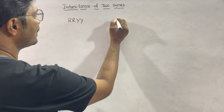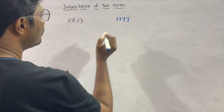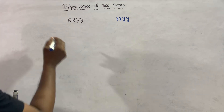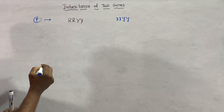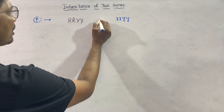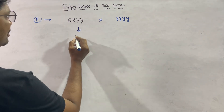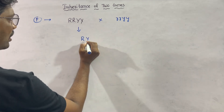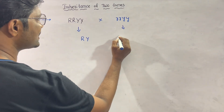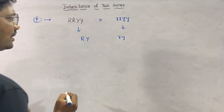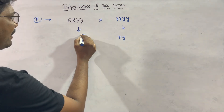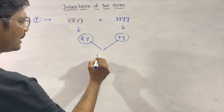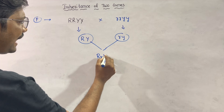We need parents that are true breeding — homozygous — for their respective characters. We cross these two parents. The gametes from one parent are capital R and capital Y, and the gametes from the other parent are small r and small y. When these combine to produce F1, we get capital R small r capital Y small y.